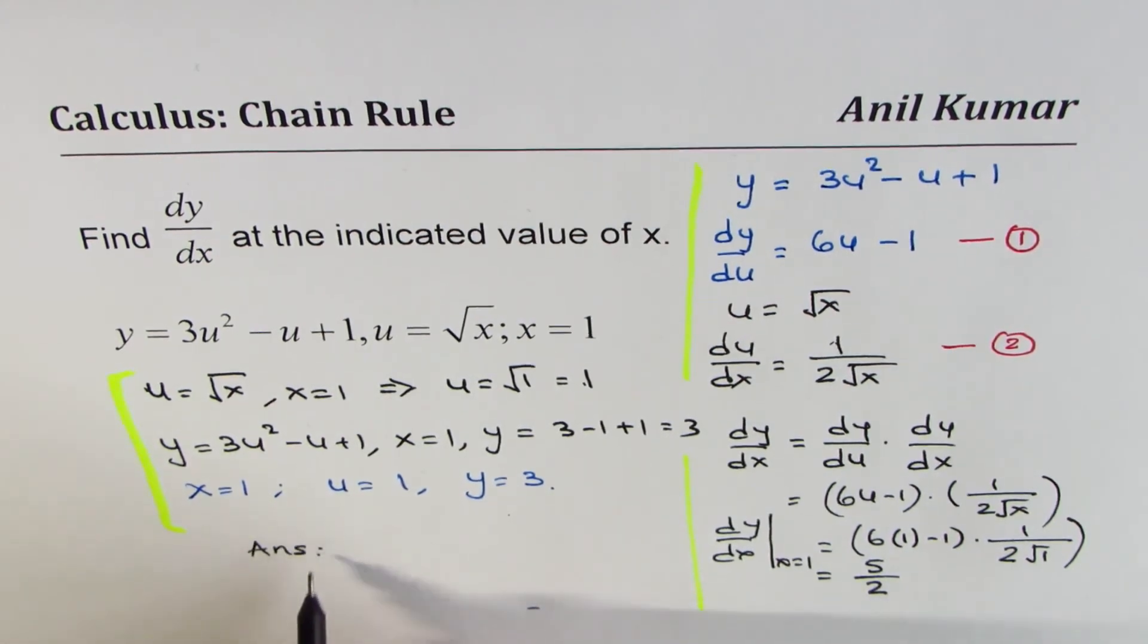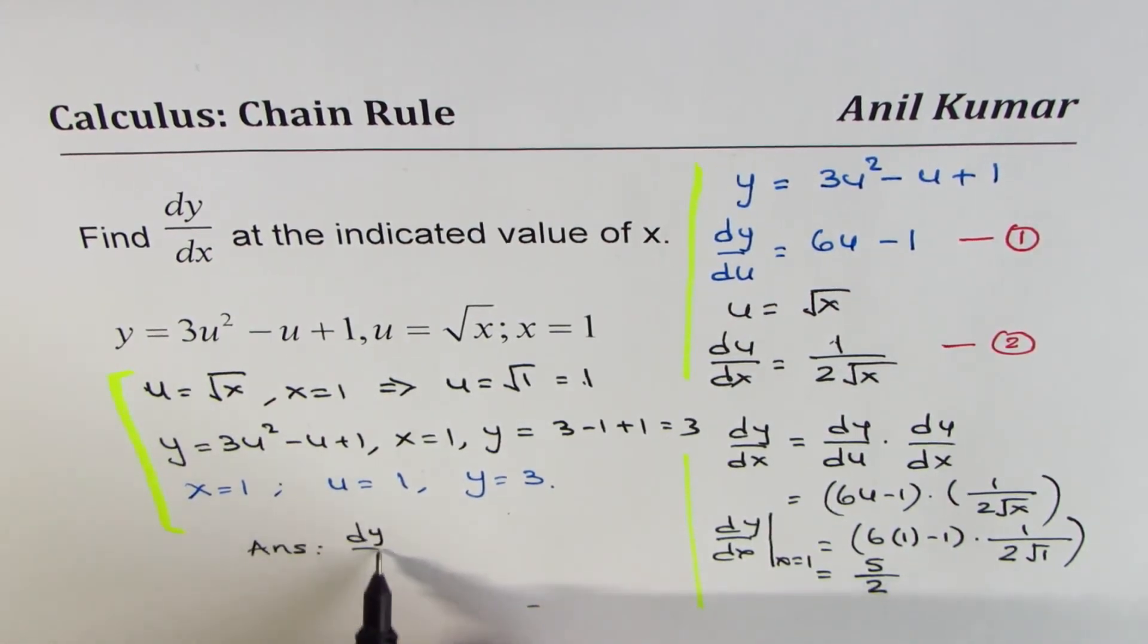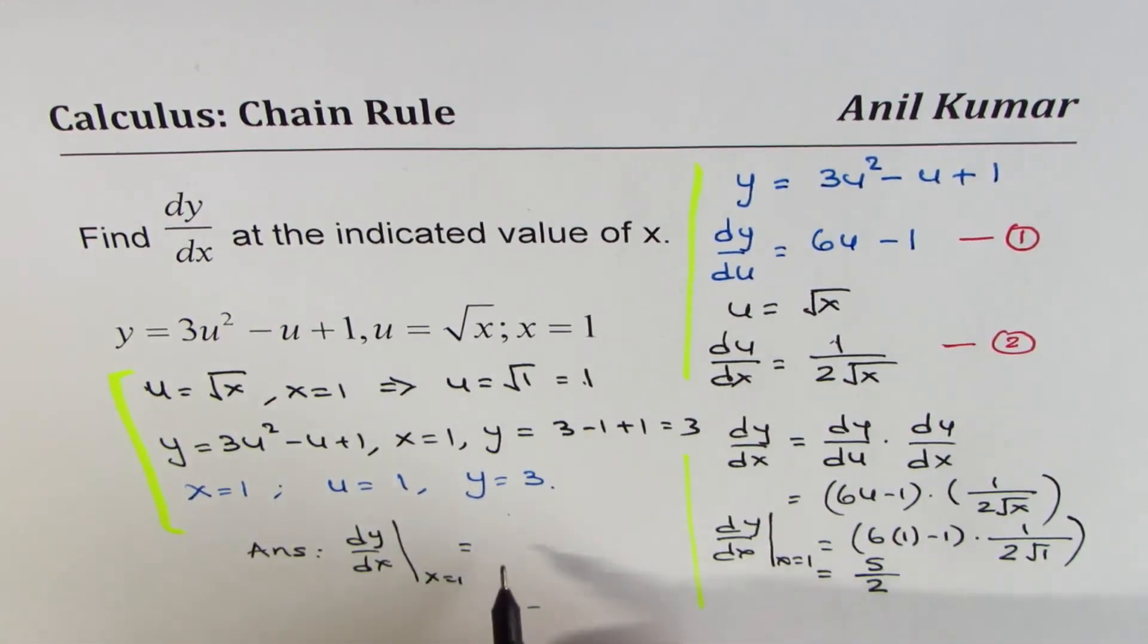So we can write down our answer as dy/dx at x equals 1 is equal to 5 over 2. So that is how you could actually solve such questions.